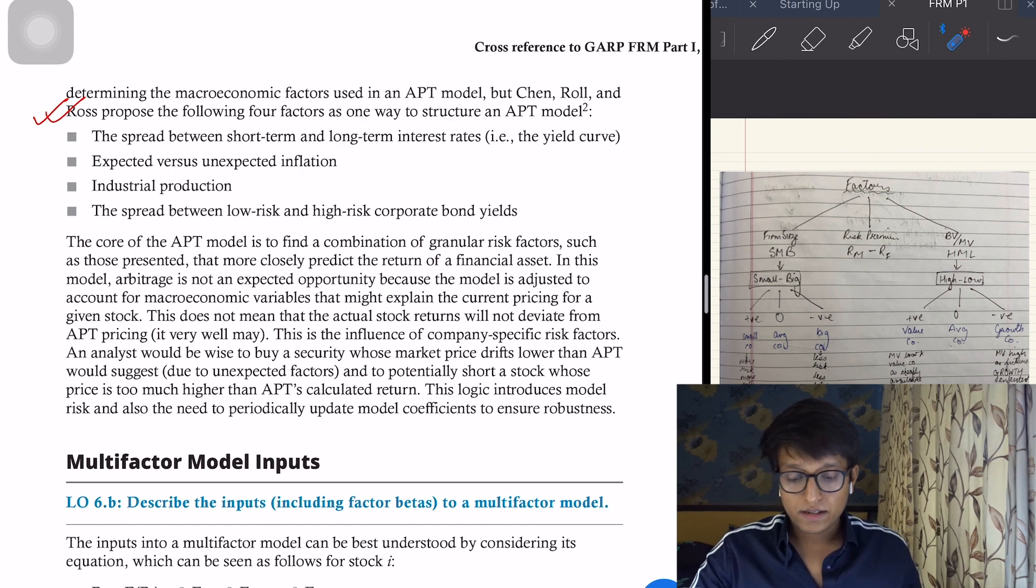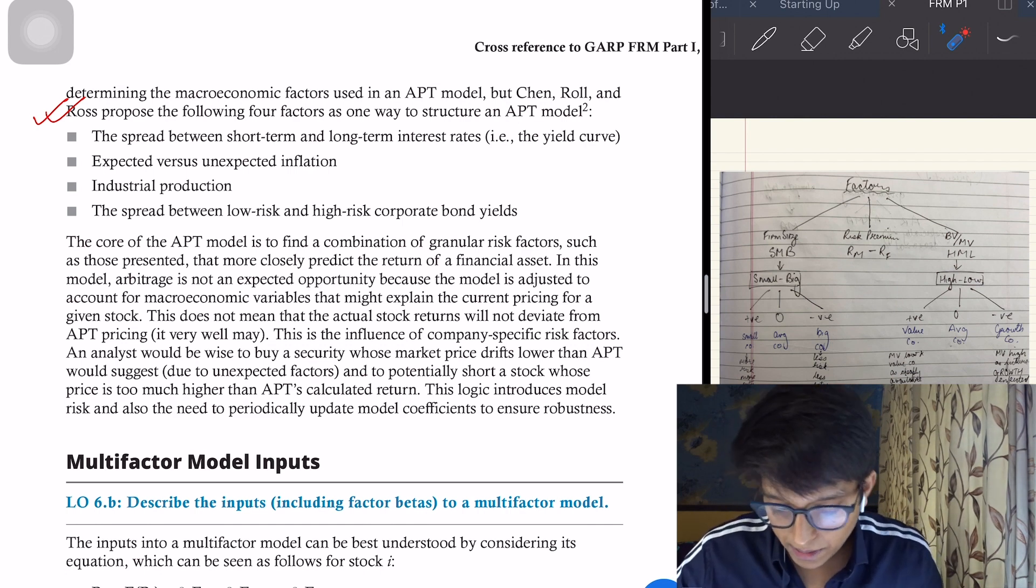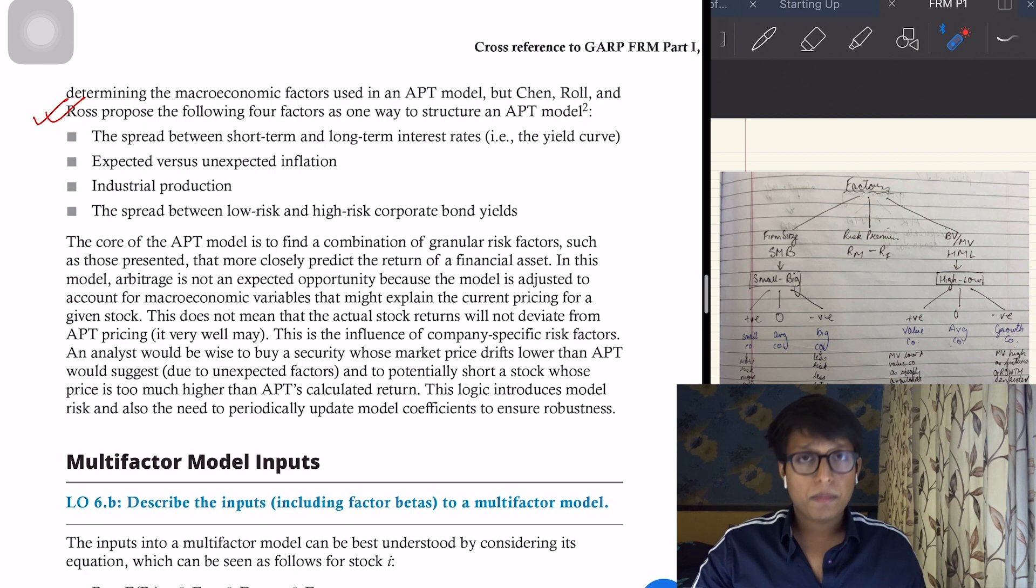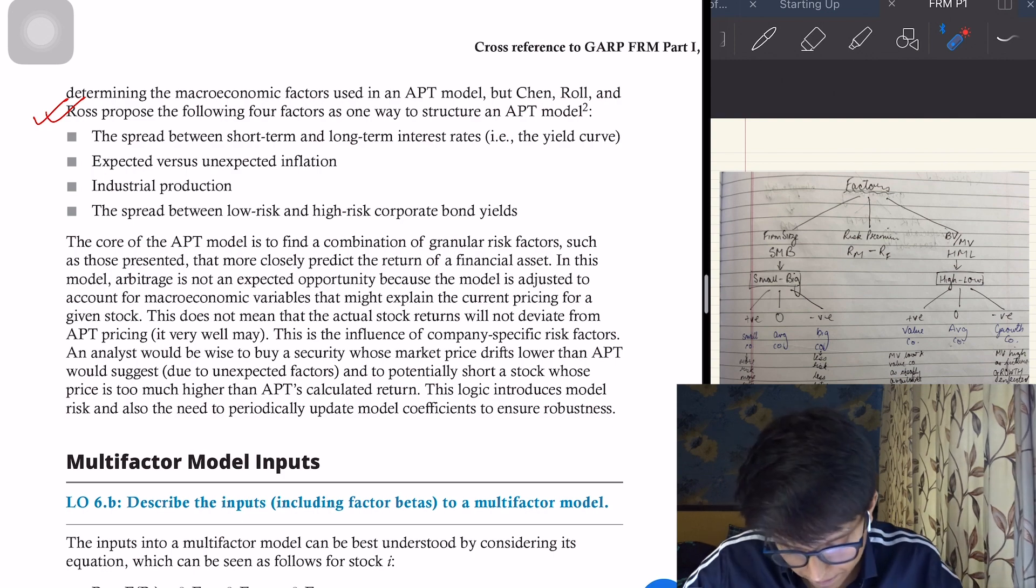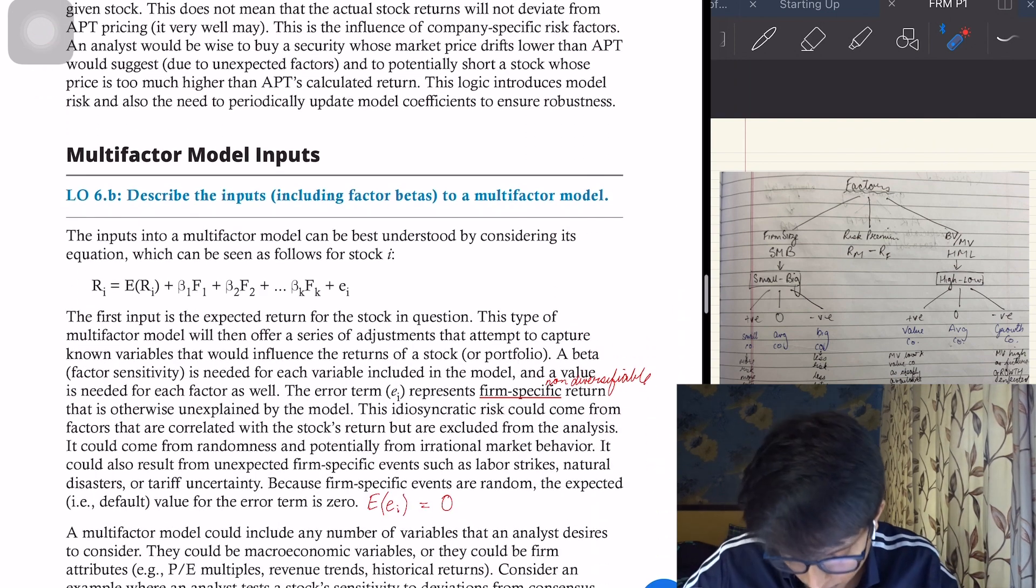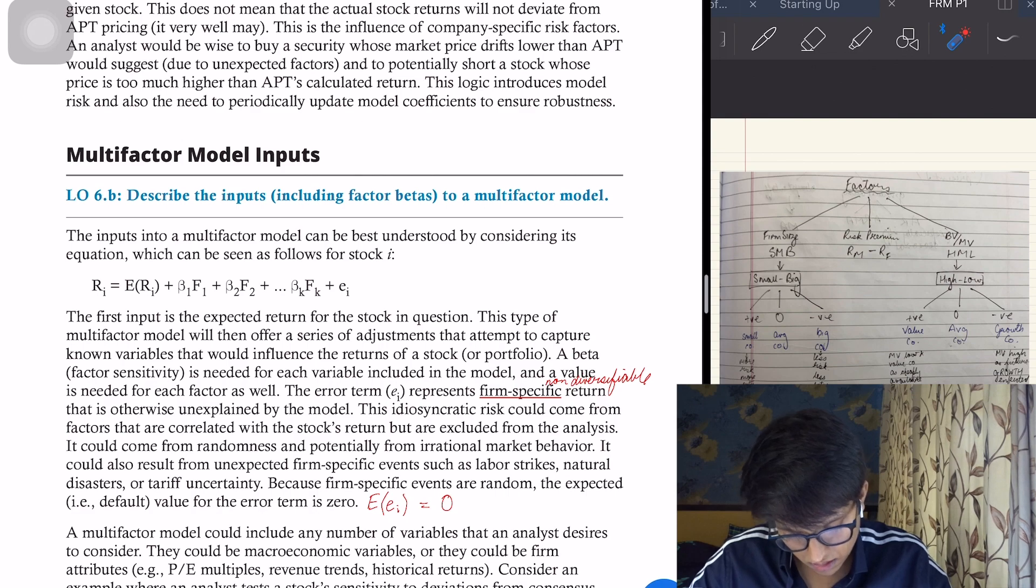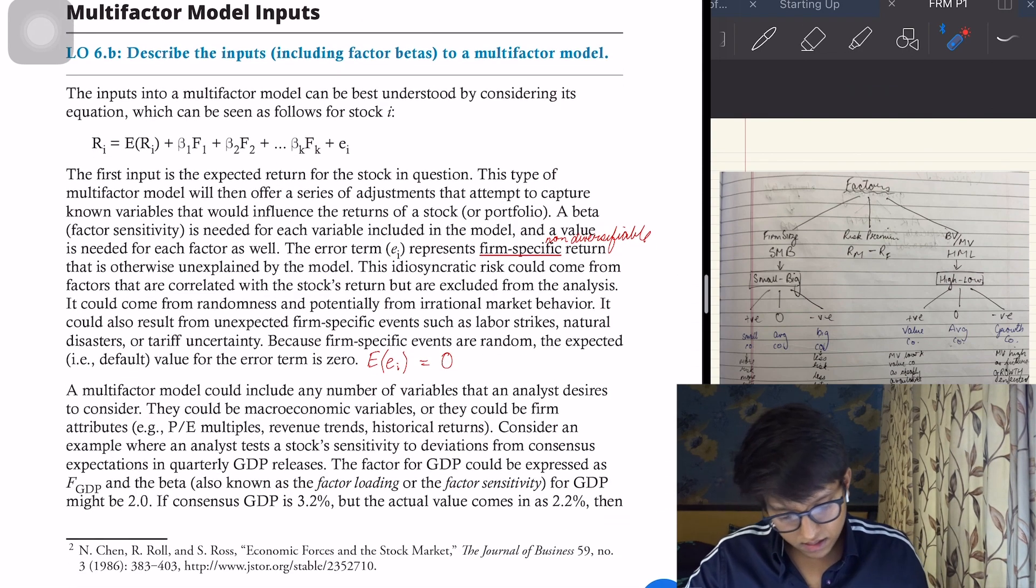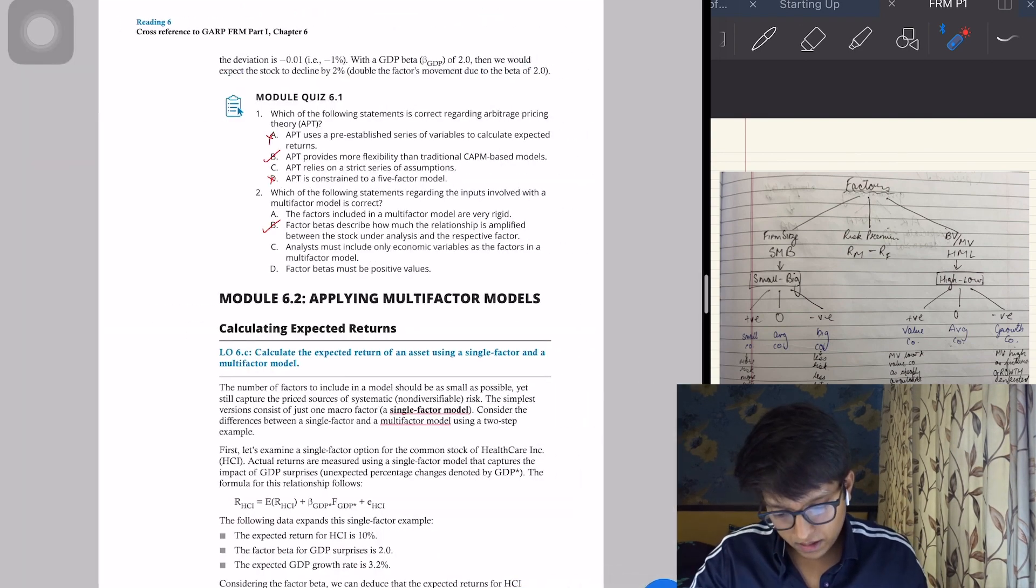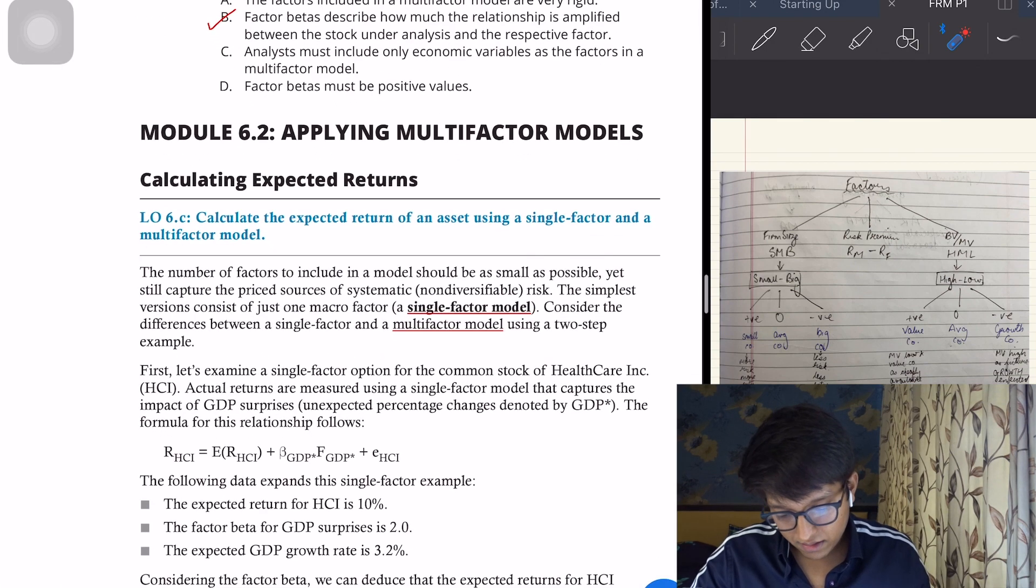The second one is expected versus unexpected inflation. Third one is industrial production levels, and the fourth one would be the spread between low-risk and high-risk corporate bond yield. A few of them are pretty repetitive, so later on we'll study better models as well that were developed. Again, this is the same thing: multi-factor model, calculating expected return.